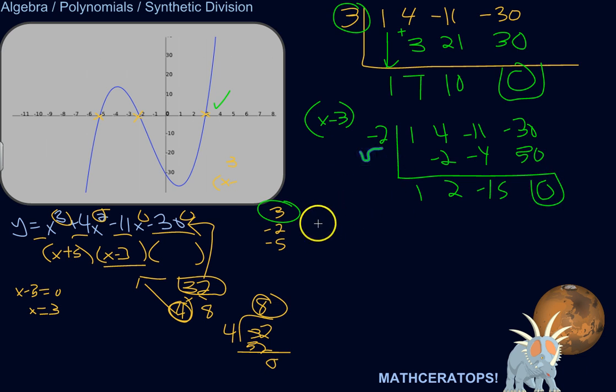Okay. Negative 2 is a root, which means x plus 2 is a linear factor. Good. All right. Let's not check that one. Let's check 7.